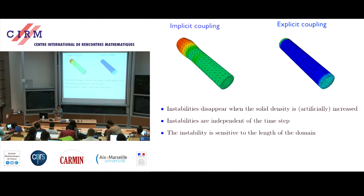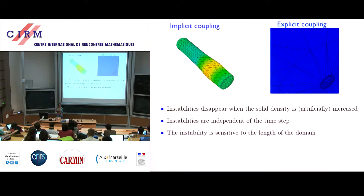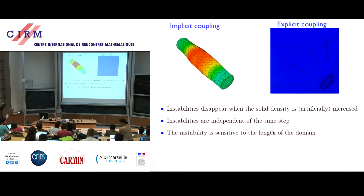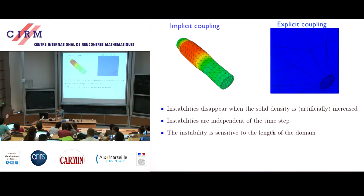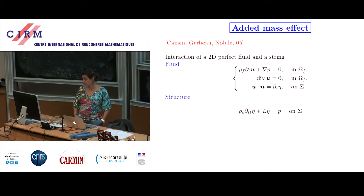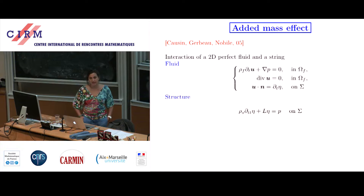So, once again, the bad behavior of the explicit coupling can be explained by this added mass effect, which is mainly linked to the incompressibility constraint. We go back to the example I gave you two days ago, which illustrates rather well this effect.